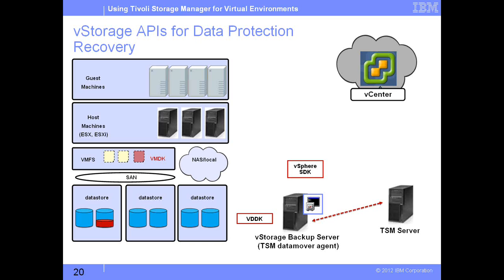On slide number 20, we are looking at vStorage APIs for data protection recovery. We have completed backups for all VMs, and there is now a need to perform a restore. As a first step, once I initiate a restore from my client, the VM image is created on one of the ESX hosts. We can select which ESX host and which datastore we want to restore the VM into. Once this VM is created, the VM data is brought back from the TSM server backup and restored into the infrastructure, and the guest machine is ready.